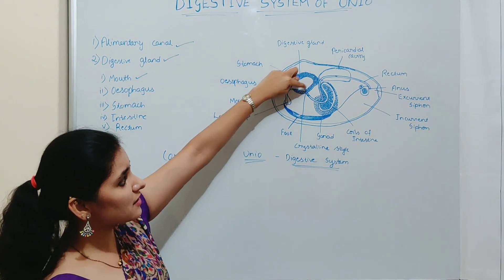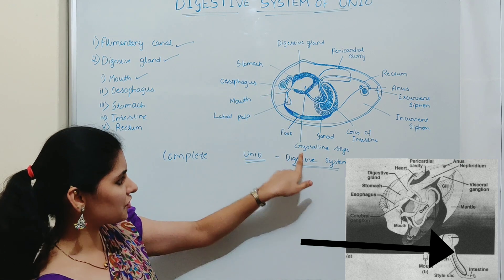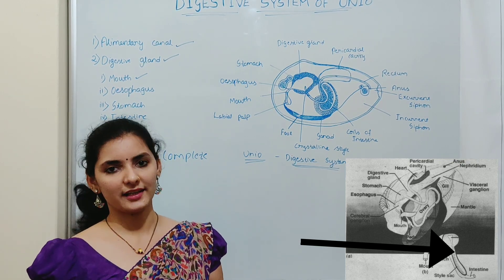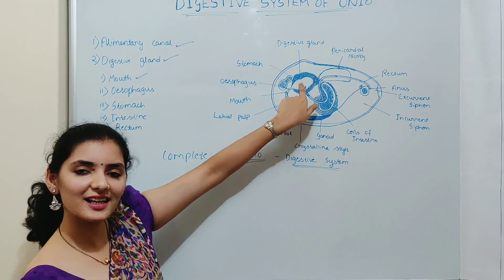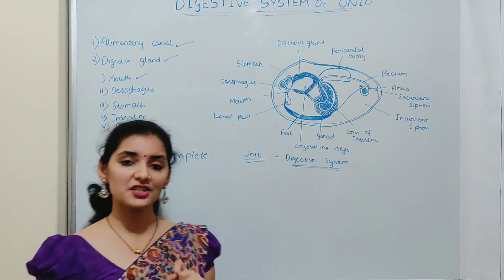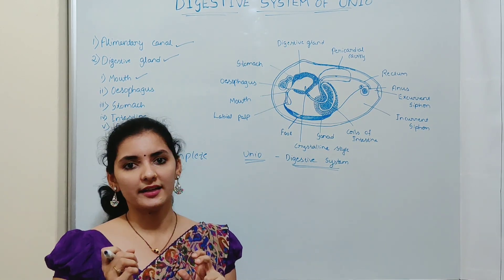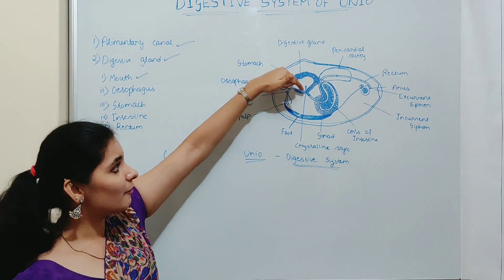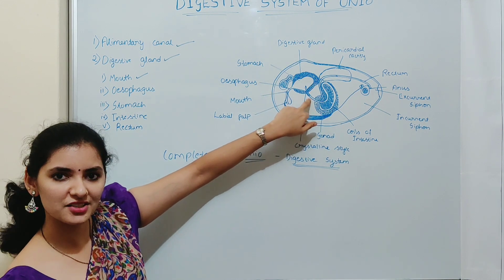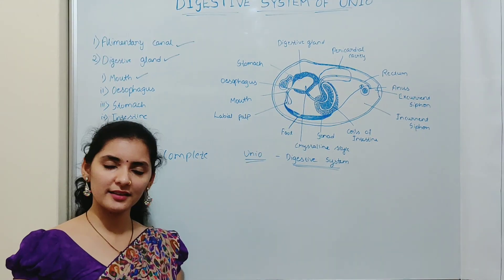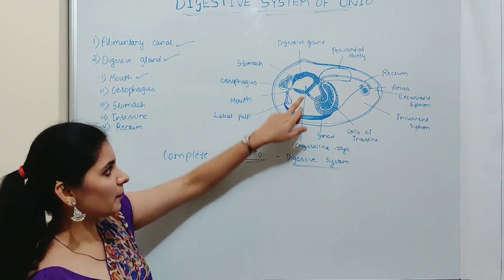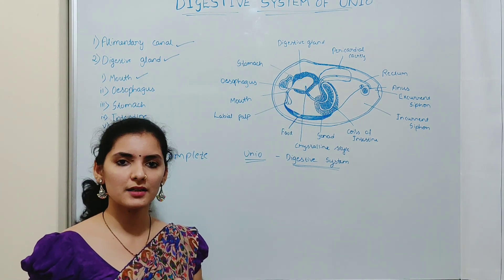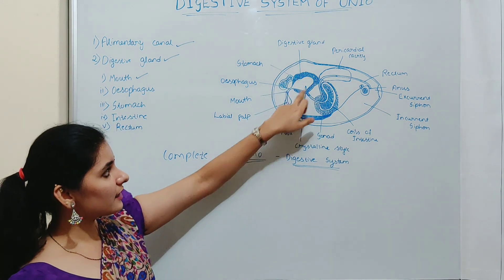On the ventral surface of the stomach there is a specialized structure called the crystalline style. The crystalline style is a gelatinous, transparent, rod-like structure secreted by the cells of the stomach itself. It has a matrix containing numerous enzymes. Upon rotation of the crystalline style by the movement of the stomach's cilia, the enzyme matrix is poured into the stomach, where it helps digest the food present there.